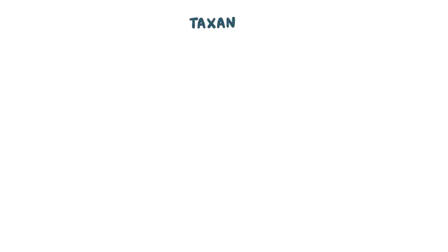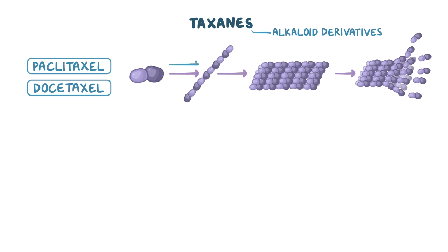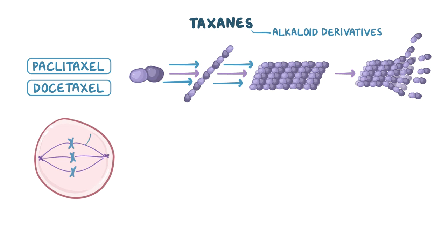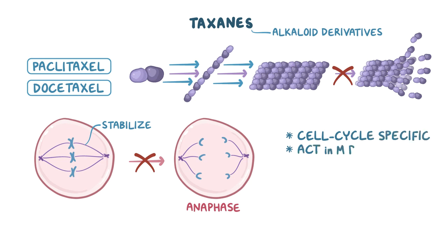Next are the taxanes, which are also alkaloid derivatives and include paclitaxel and docetaxel. Taxanes also act on microtubules but differently from vinca alkaloids. They enhance tubulin polymerization into protofilaments and microtubules, but they also bind directly to the spindle fibers and stabilize them — acting like cement that overstabilizes the microtubule and prevents depolymerization. This is a problem because microtubules need to break down during anaphase for the cell to divide. So taxanes are also cell cycle specific and act on M phase.